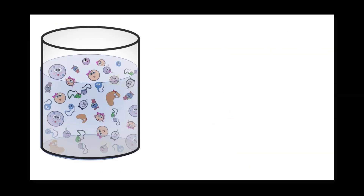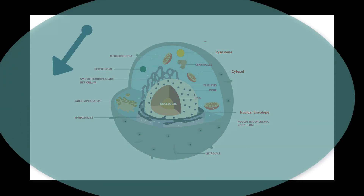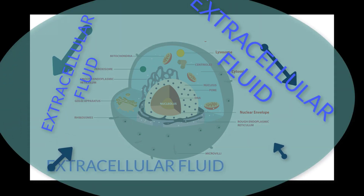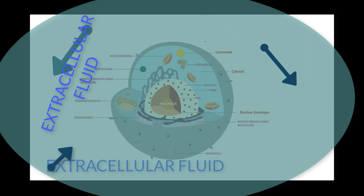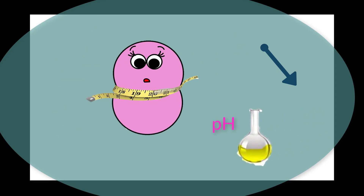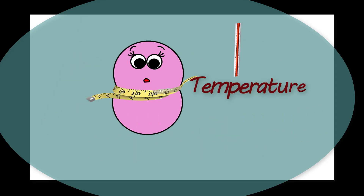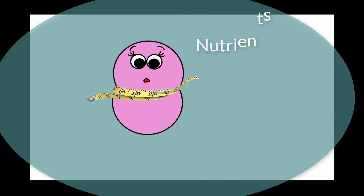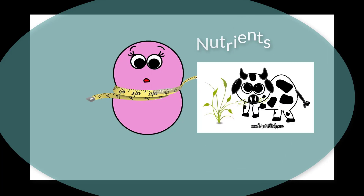Cells, like all living organisms, respond to changes in their environment. For a cell in the body, the environment is the extracellular fluid. Some of the environmental components that affect cells include osmotic pressure, pH, temperature, hormones, and available nutrients.